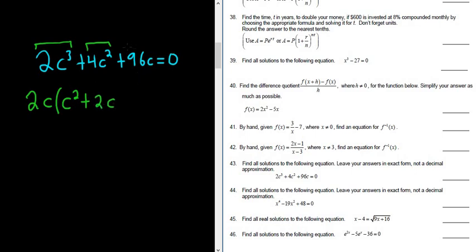And then what do we multiply by 2c in order to get 96c? I guess 48 would be a good choice. And all of this is equal to 0.